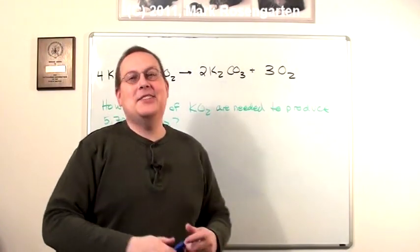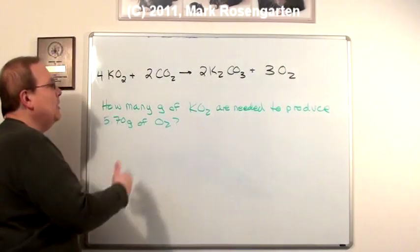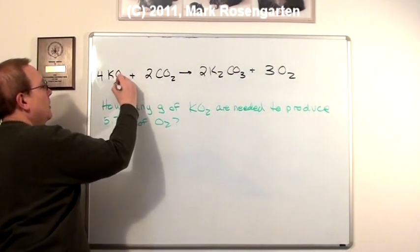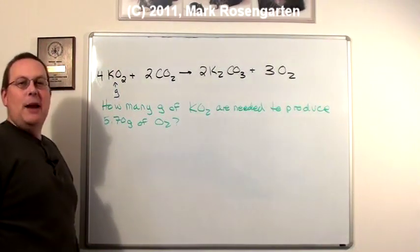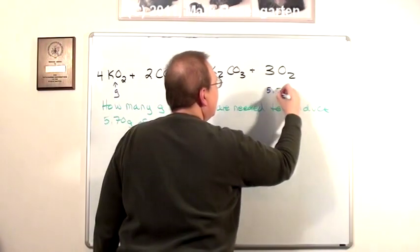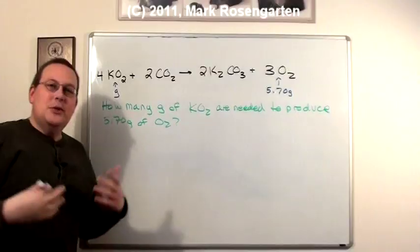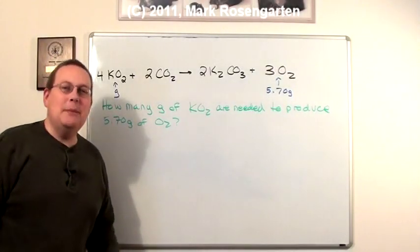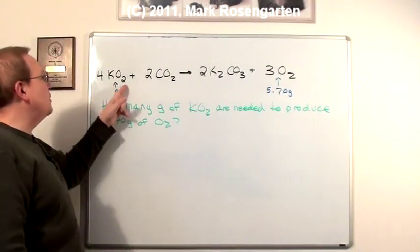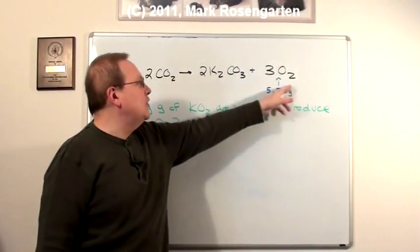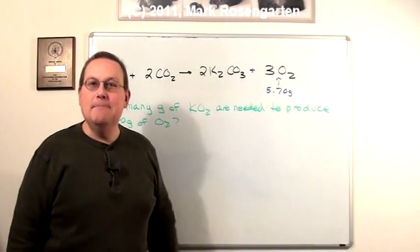Now, the question that's being asked based on this reaction is, how many grams of K2O2 are needed to produce 5.70 grams of O2? So it comes down to a basic stoichiometry problem. Notice that the mole ratio between potassium superoxide and oxygen is a 4 to 3 mole ratio.